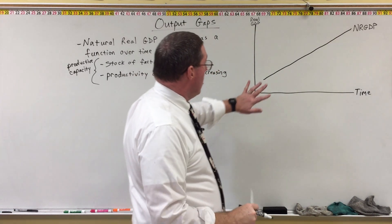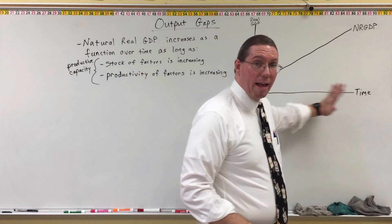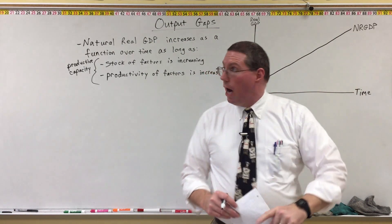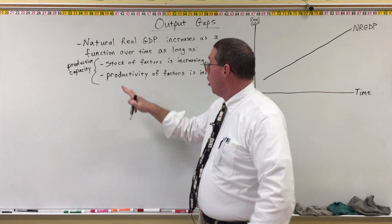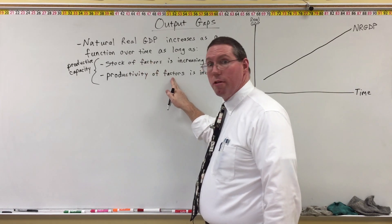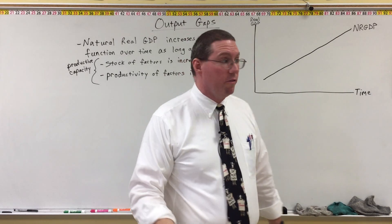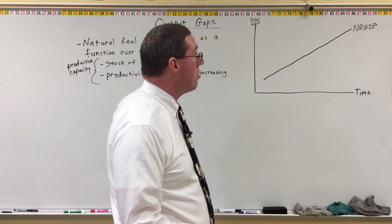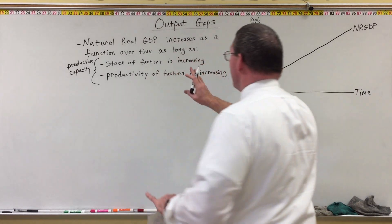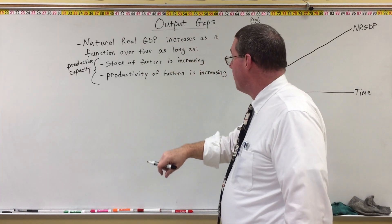This graph represents the fact that as time moves on and years pass, we as an economy are getting more land, labor, and capital, and that land, labor, and capital is getting better and better in quality — we're able to use it better and better. That is based on long-run real GDP.